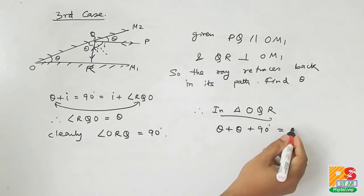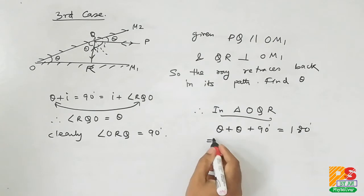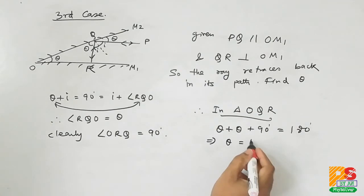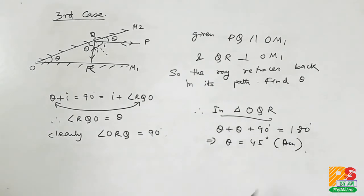The three angles are theta, theta, and 90 degrees. Clearly theta equals to 45 degrees. That's the answer. Thank you for watching this video. Please subscribe to my channel Phi Solver.